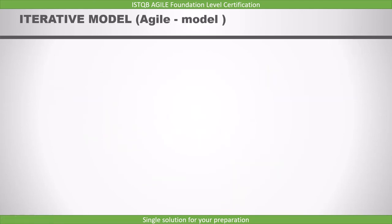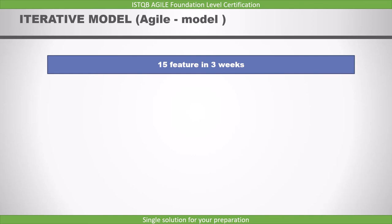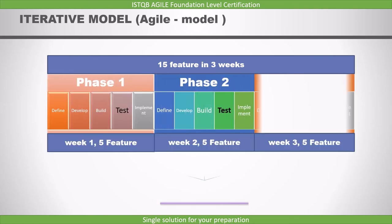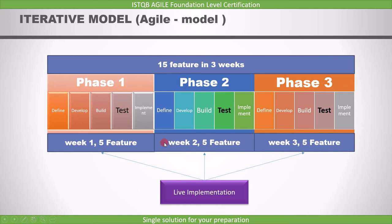Let's see the iterative development model. An example is the Agile model, which is the most popular model in the industry right now. Suppose you have a software that you need to implement in 3 weeks and it has 15 requirements. If you use the Agile model, it will have 3 different phases — each phase will be for 1 week. Since we have to complete the project in 3 weeks, we decide to develop 5 requirements in phase 1, 5 in phase 2, and 5 in phase 3. At the end of 3 weeks, we will have 15 implemented requirements.